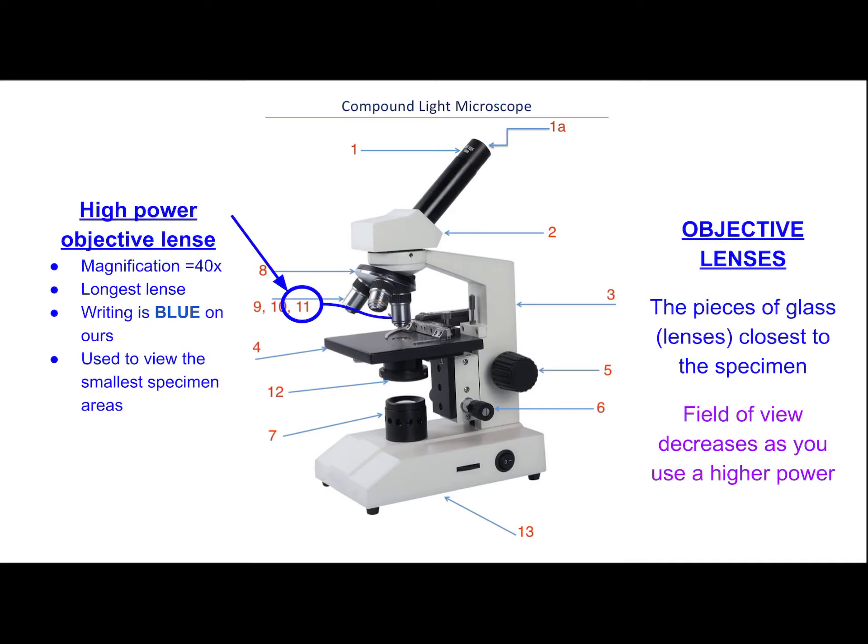When you're done with the microscope, it's important to put it away properly. Wind up the cord — there are places on the back to wind it — and do not wind it around the light source. Then replace the dust cover before using two hands to return the microscope to the cupboard. There are numbers on each microscope, so please place them in the correct spot in the microscope cabinet.